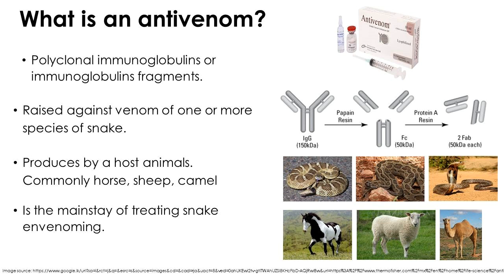Antivenom contains polyclonal immunoglobulins or immunoglobulin fragments which are raised against venom of one or more species of snake. Antivenom raised against one species of snake is known as monovalent, while antivenom raised against several species is known as polyvalent. Antivenom is produced using host animals such as horse, sheep, and camel.